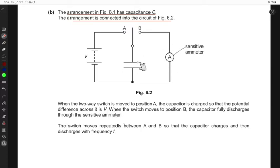So the current goes through, or the charges flow to the ammeter, and so they're leaving the capacitor, therefore it's discharging. The switch moves repeatedly between A and B so that the capacitor charges and then discharges with frequency F. So this switch goes here and then goes here, so it oscillates between the two and so the capacitor charges and discharges.